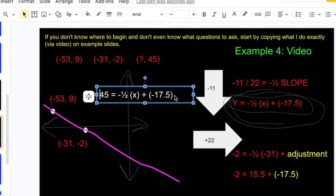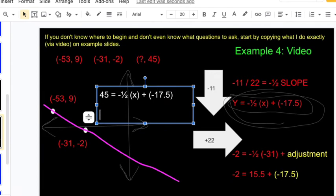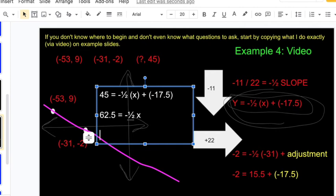Let me add seventeen and a half to both sides, so we got sixty-two point five equals negative one-half x. And then let me multiply both sides by negative two. Got negative one hundred twenty-five equals x.